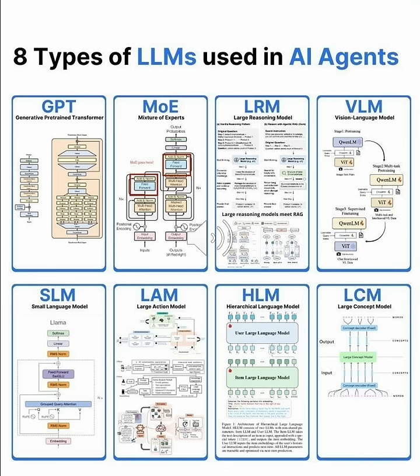Then there's LRM, large reasoning models. These excel at the reasoning pattern, breaking down complex problems step by step. They use Retrieval Augmented Generation, or RAG, to ground their reasoning in real data. Perfect for logical analysis, mathematical reasoning, and multi-step problem solving.